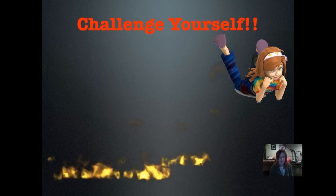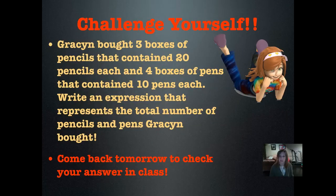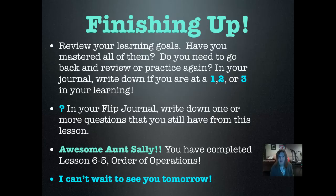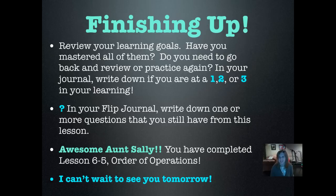It's time to challenge yourself. Grayson bought 3 boxes of pencils containing 20 pencils each, and 4 boxes of pens containing 10 pens each. Write an expression that represents the total number of pencils and pens Grayson bought. You can even decide what your variables stand for and make up a problem to solve it. Come back tomorrow to check your answer in class. We used PEMDAS today and substituted numbers for variables. Write down any questions you still have, and record in your journal whether you're at a 1, 2, or 3 level in your learning. You've completed Lesson 6-5, Order of Operations.